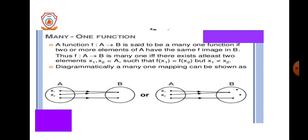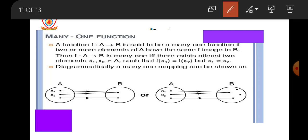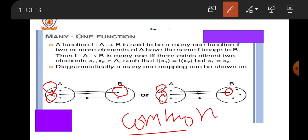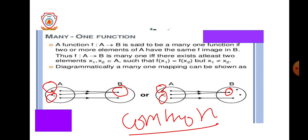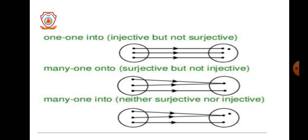Next is the many-one function. As the name says, many elements map to one element. A function is said to be many-one if two or more elements of A have the same image in B. For example, x1 and x2 both have the same image in B — that is why it is many-one, because many elements share one image.